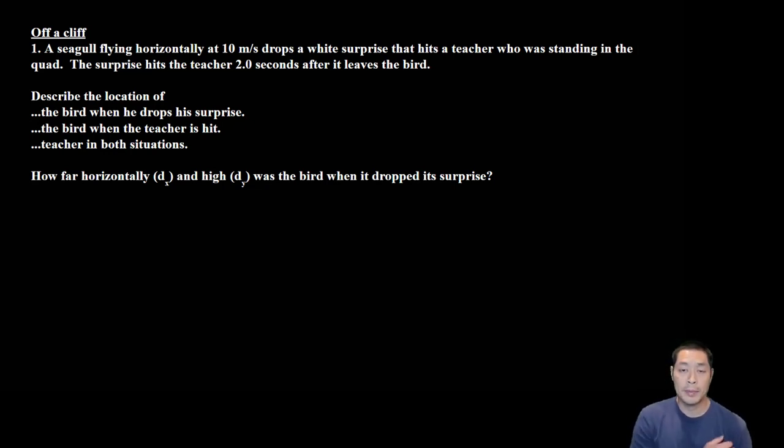This problem set is really nice because it goes over all the main types of problems that you might see, and I ordered it from easiest to hardest. The first one is off a cliff, which is the classic problem where something is driven off a cliff with a car, you jump off, roll a ball off, or shoot a projectile horizontally like a gun, arrow, or throw something horizontally.